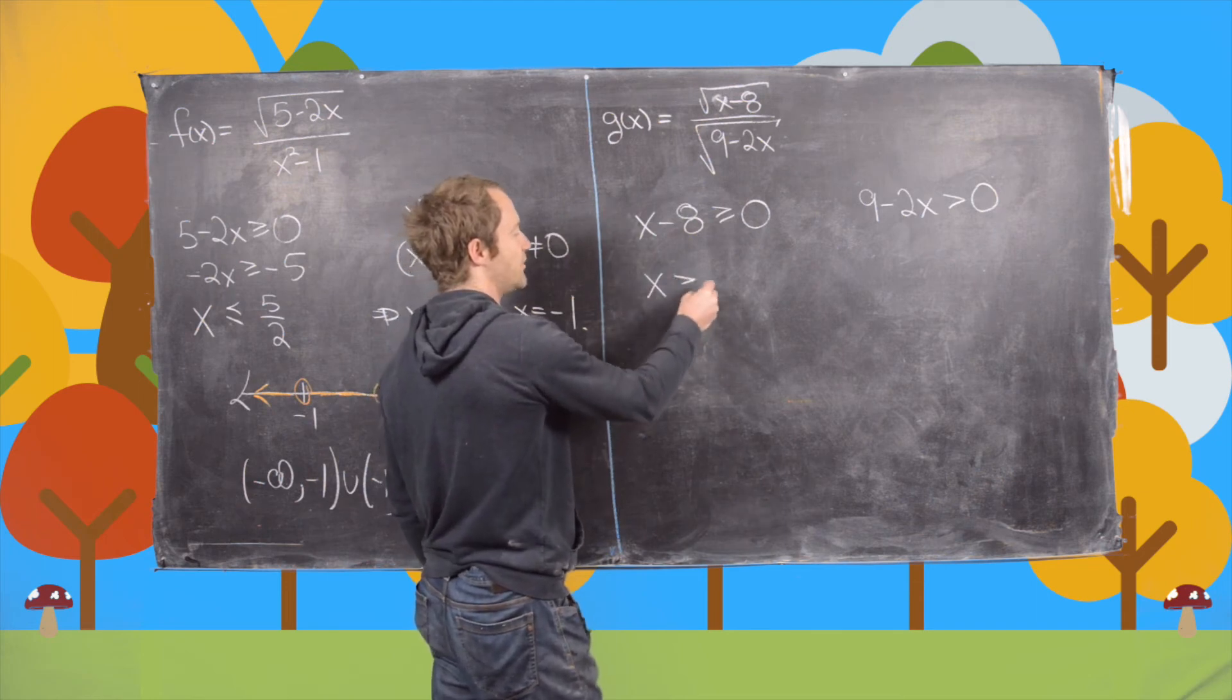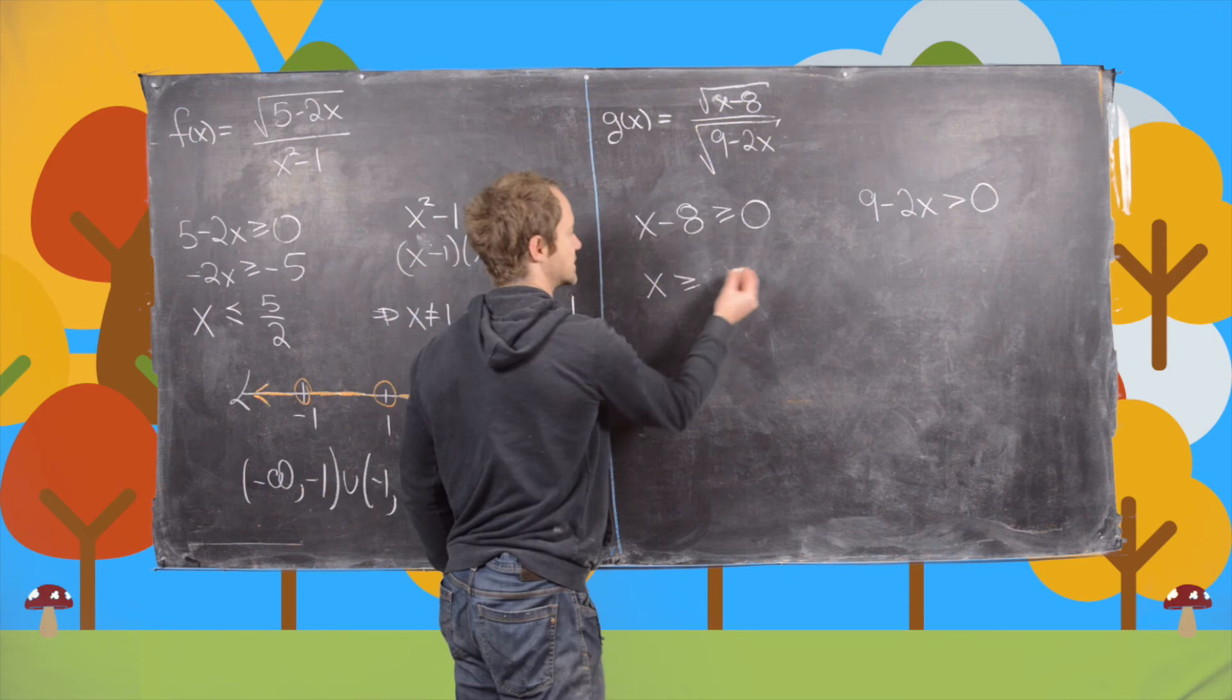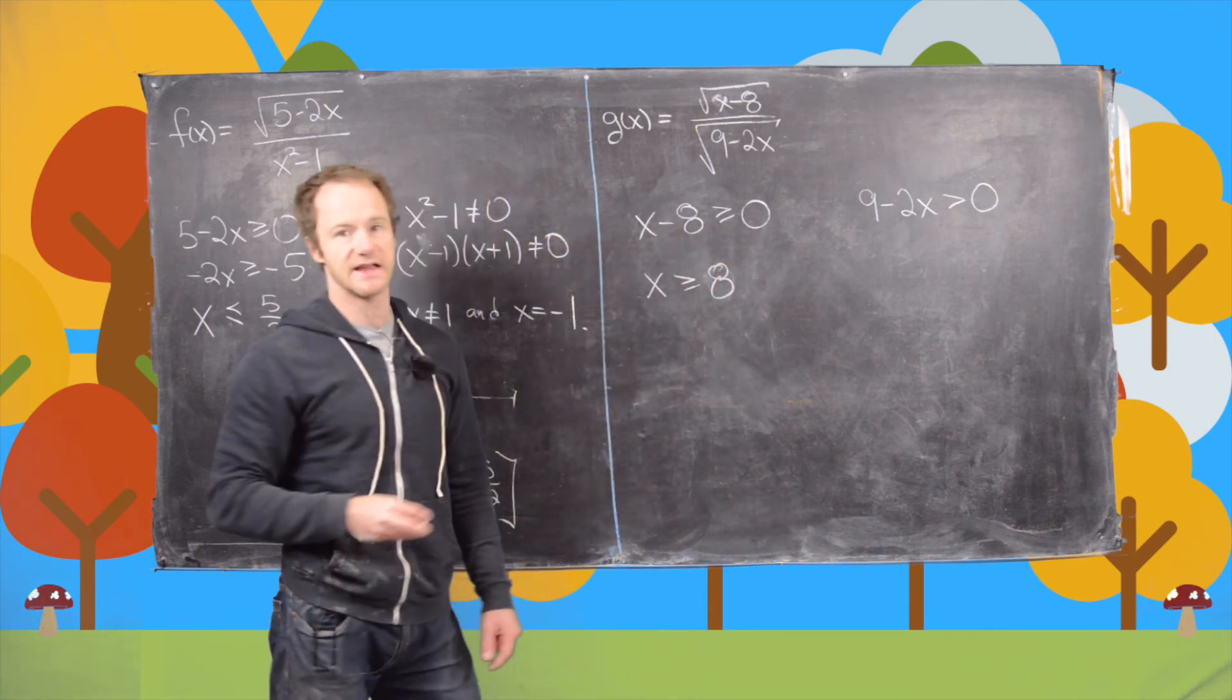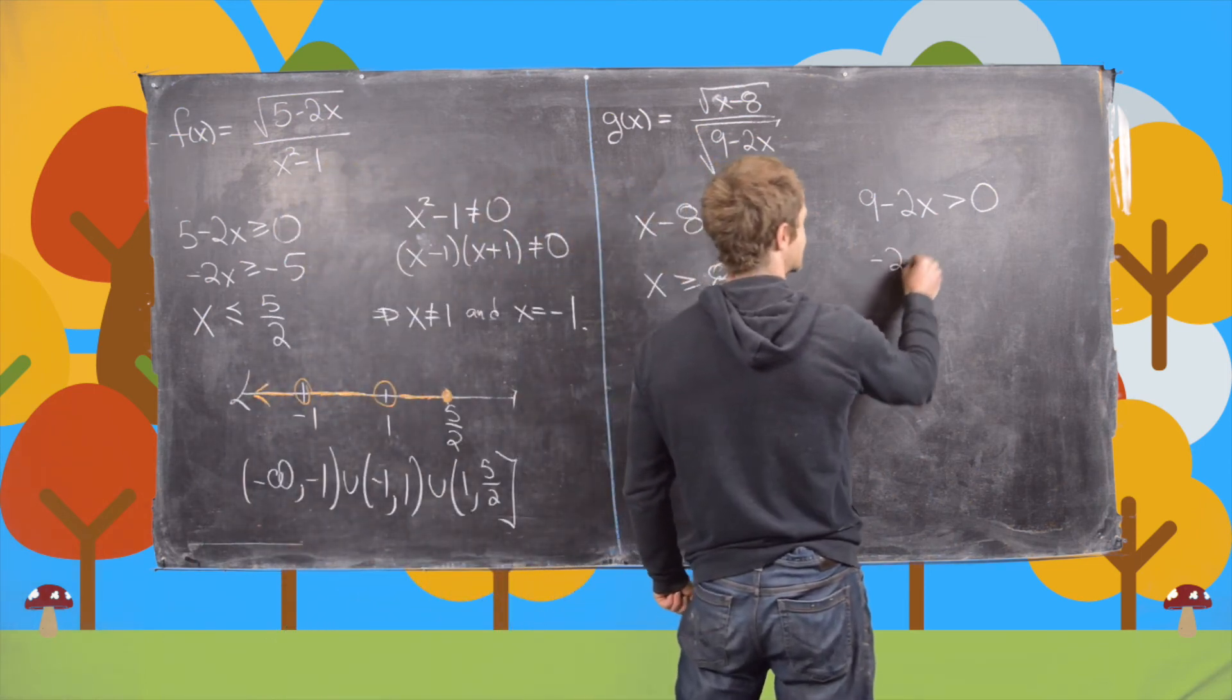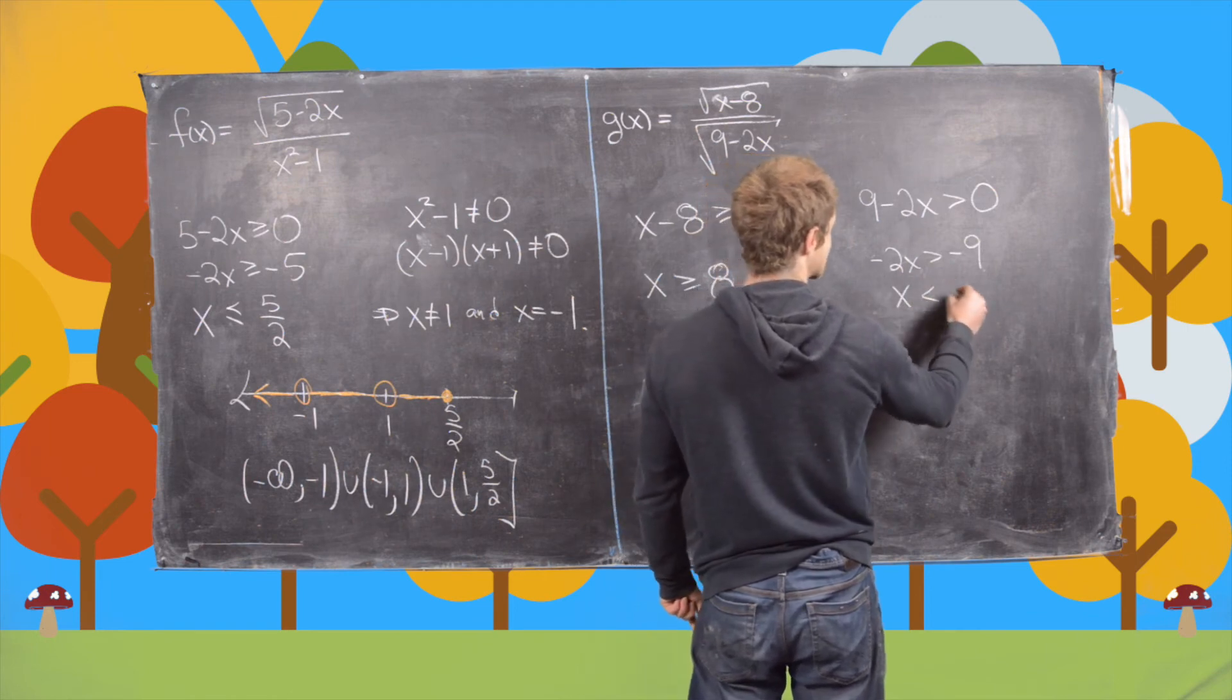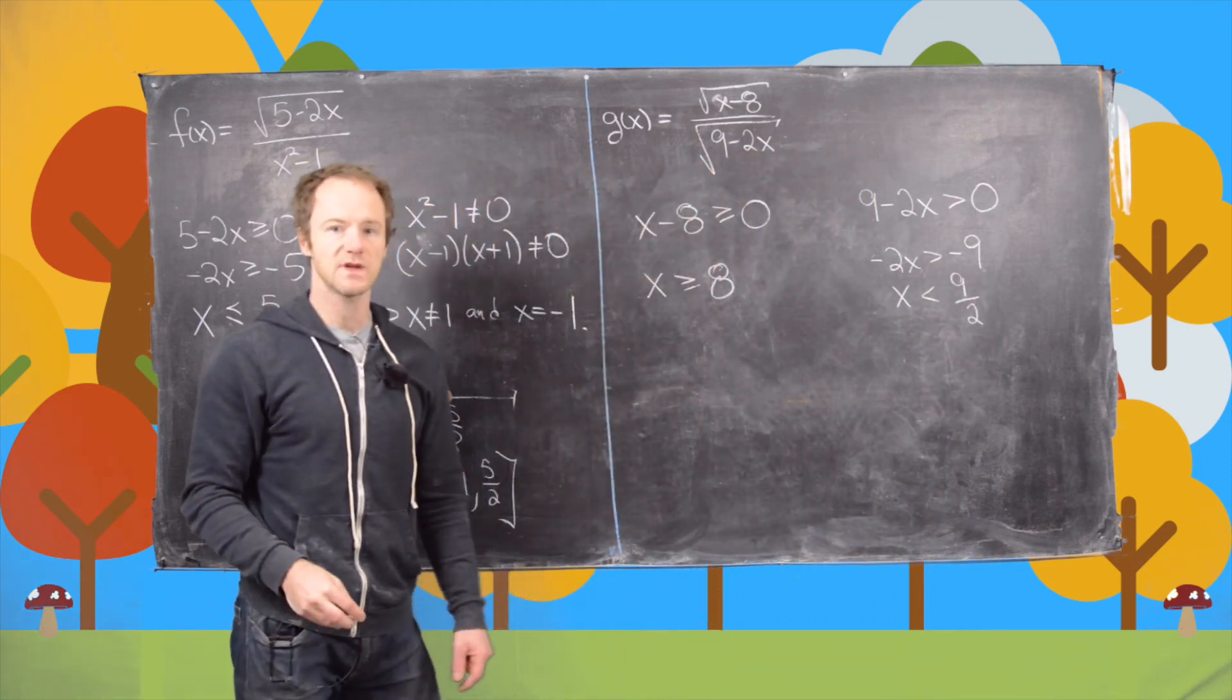So now let's solve each of these. This gives us x is bigger than or equal to 8. And then solving this one, we get minus 2x is bigger than minus 9, which gives us x is less than 9 over 2.